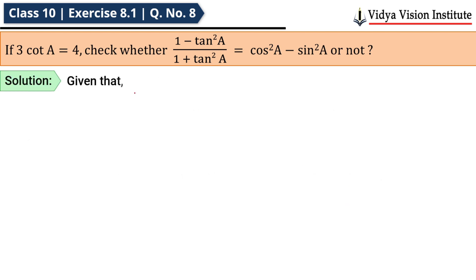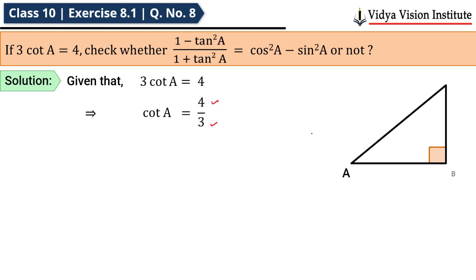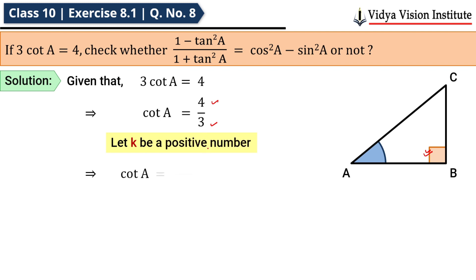Given: 3·cot A = 4, therefore cot A = 4/3. Let's consider triangle ABC which is right-angled at B, and this is angle A. Taking k as a positive number, cot A = 4k/3k.